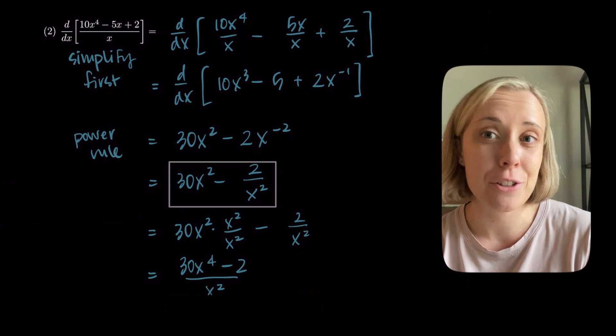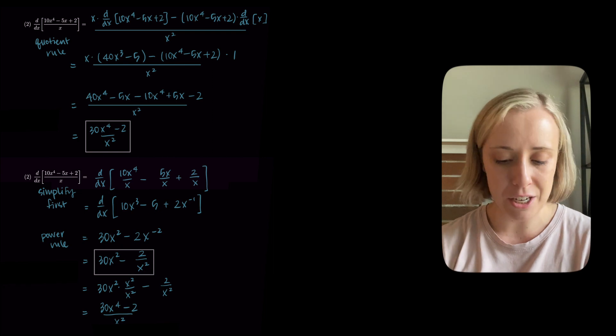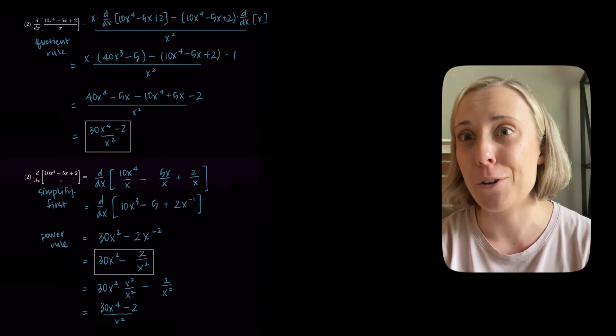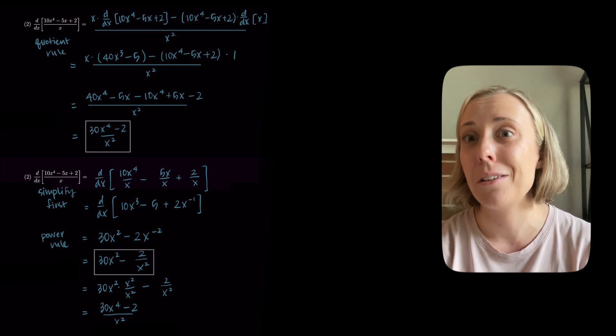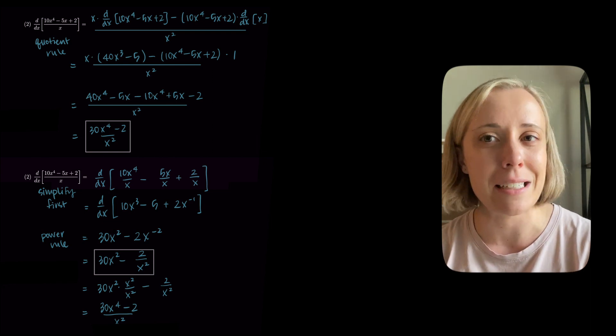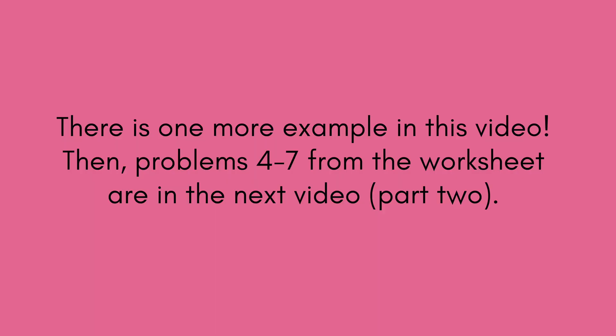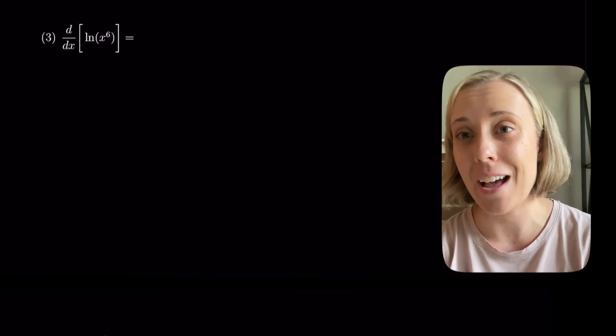This is a good reminder that your answer might look different from someone else's without either being wrong. Math can be written differently but still represent the same thing. If a derivative calculator gives a different-looking answer, don't immediately assume you're wrong — it may just be written in a different form. There's one more example in this video; problems four through seven are in part two.